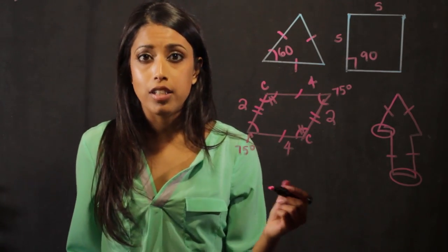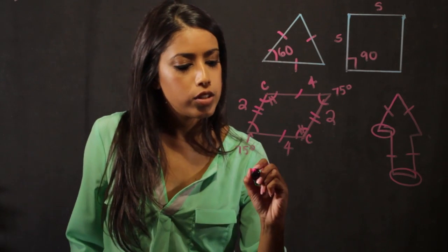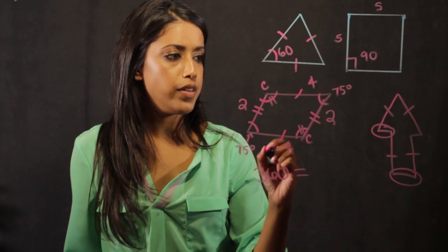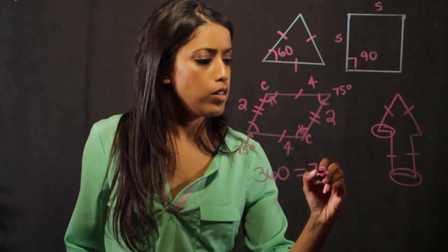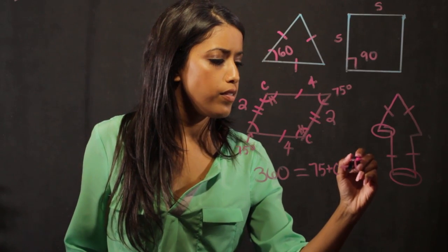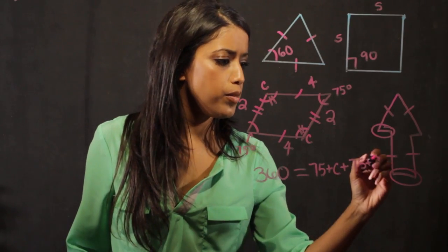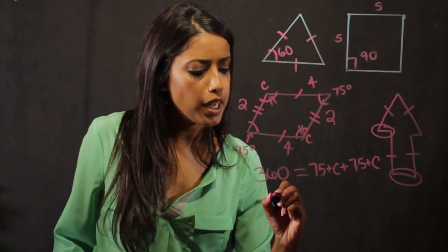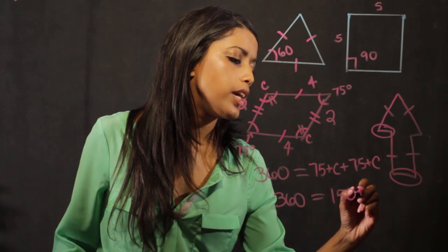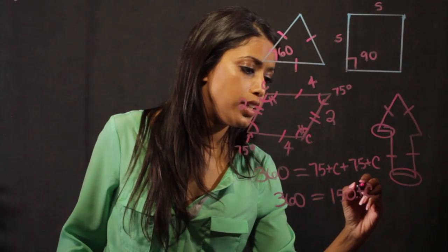I know that there are 360 degrees in a square. So 360 is equal to 75 plus C plus 75 plus C. So when I simplify this down, I get 360 is equal to 150 plus C plus two C's.